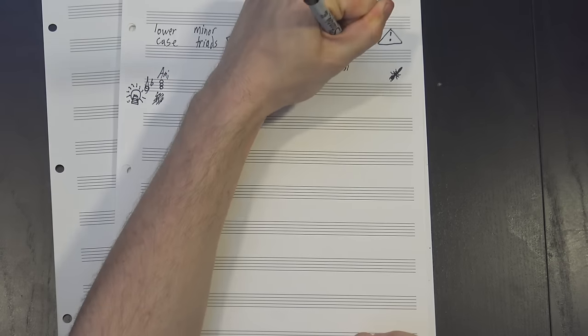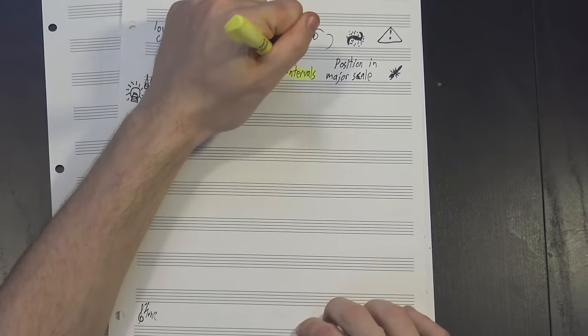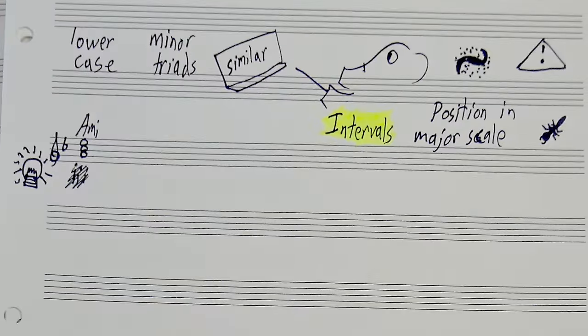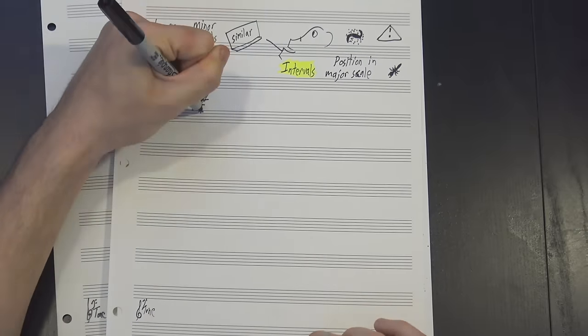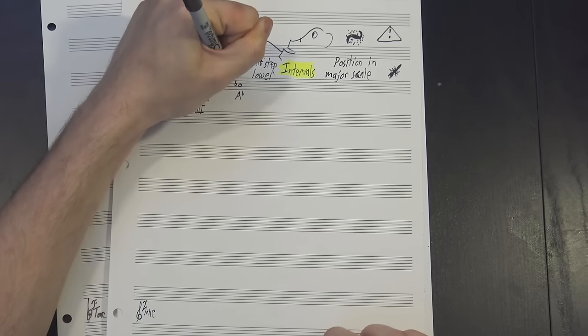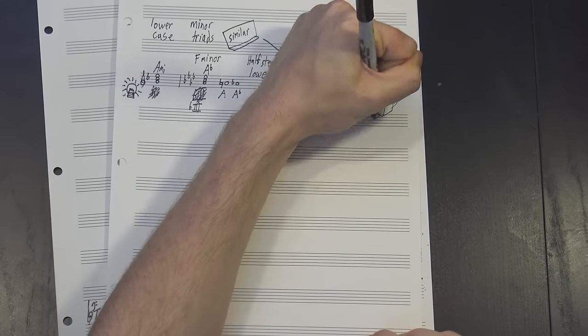Also, for me, the Roman numerals always represent the note's position in the major scale, so if you're using a different scale with different intervals, you show that change by adding a sharp or flat in front of the number. So in F minor, Ab major would be the flat III chord, because its root is a half-step lower than the major scale's III degree. That, again, is not universal, though. It's just how I was taught.